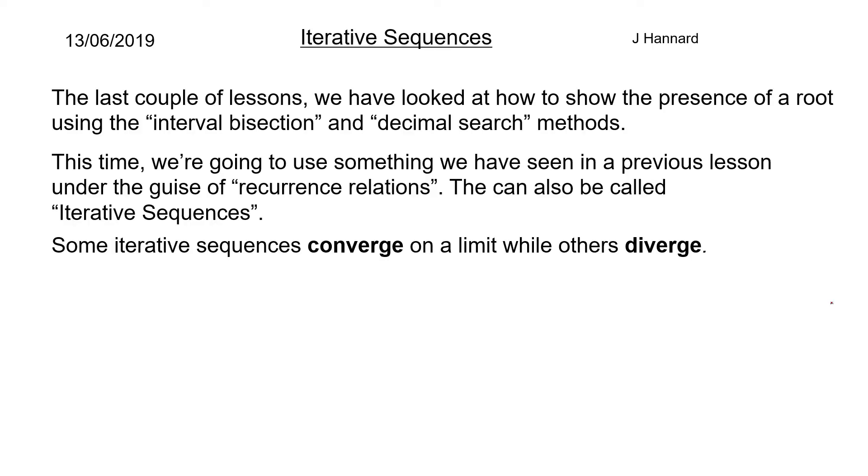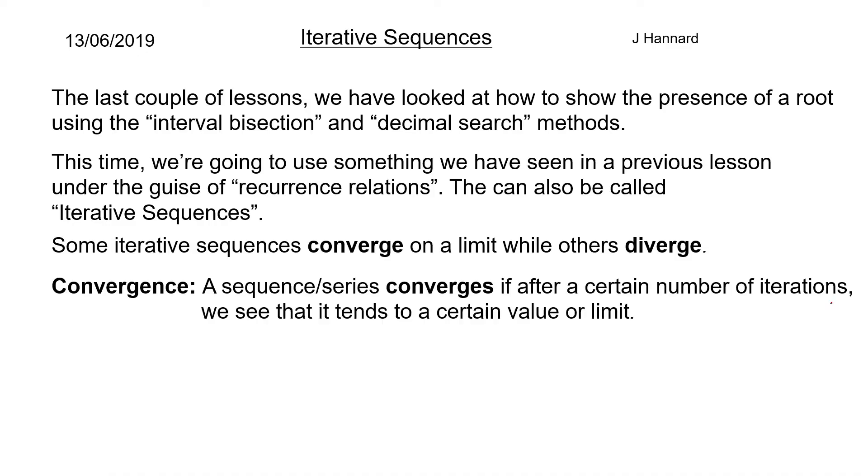Some iterative sequences converge on a limit while others diverge. We're just going to define those things now. So a sequence or series converges if after a certain number of iterations we see that it tends to a certain value or limit. So that means after maybe seven or eight iterations of putting numbers into these sequences we start to see that it's 1.47, 1.48, 1.48, 1.48, and it's converging. It has converged to a limit of 1.48.